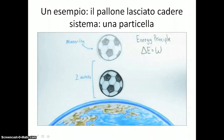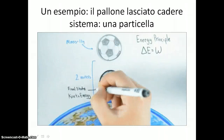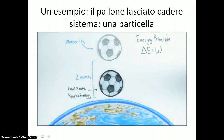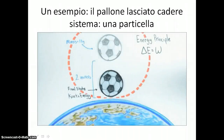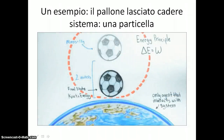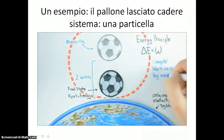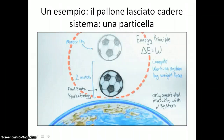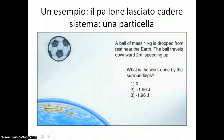Let's apply the energy principle to find the kinetic energy of the ball when it is in its final state, two meters below the starting point. If we make our standard choice of system as just the ball, then we know the Earth is the only agent in the surroundings that interacts with the system. So to use the energy principle to find the final kinetic energy of the ball, we need to compute the work on the system by the weight force. See if you can compute this work.